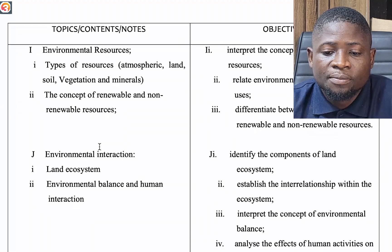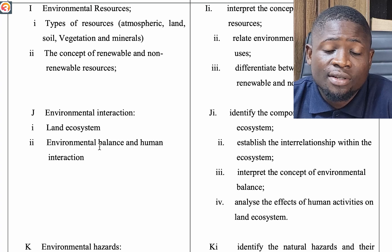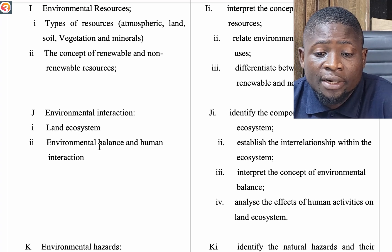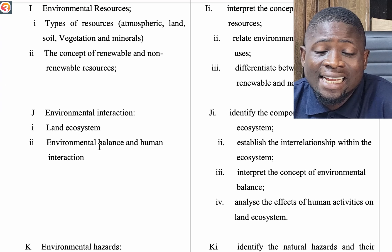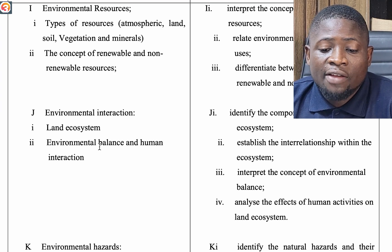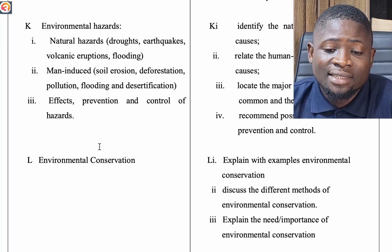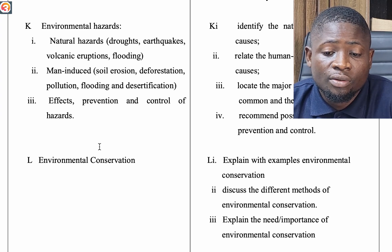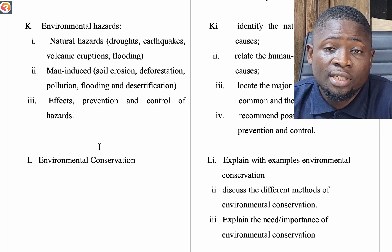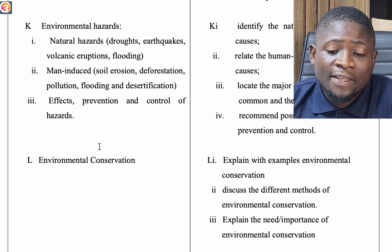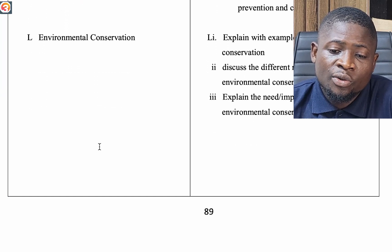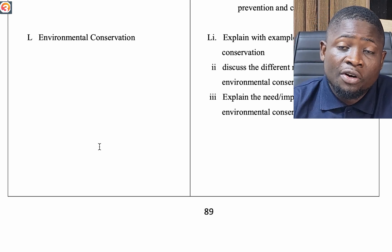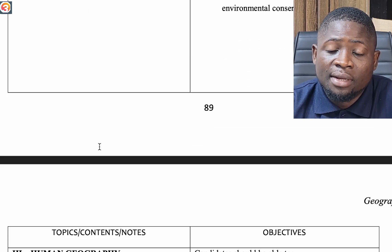We cover the impact of human activities on soils. Then environmental resources: types of resources — atmospheric, land, soil, vegetation, and minerals — and the concept of renewable and non-renewable resources. This leads to environmental interaction: land, ecosystem, environmental balance, and human interaction. Then environmental hazards: natural hazards such as droughts, earthquakes, volcanic eruptions, and flooding; and man-induced hazards such as soil erosion, deforestation, pollution, flooding, and desertification. We look at effects, prevention, and control of these hazards, and also environmental conservation — methods and importance.